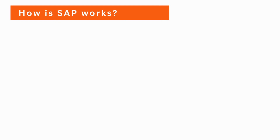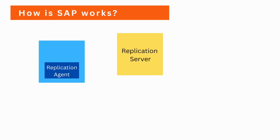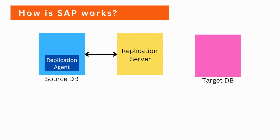Let's now see how Replication Server works. SAP Replication Server works by capturing changes made to a source database and transferring those changes to one or more target databases. The replication process is typically set up to run continuously, so changes made to the source database are immediately transferred to the target database in real-time.